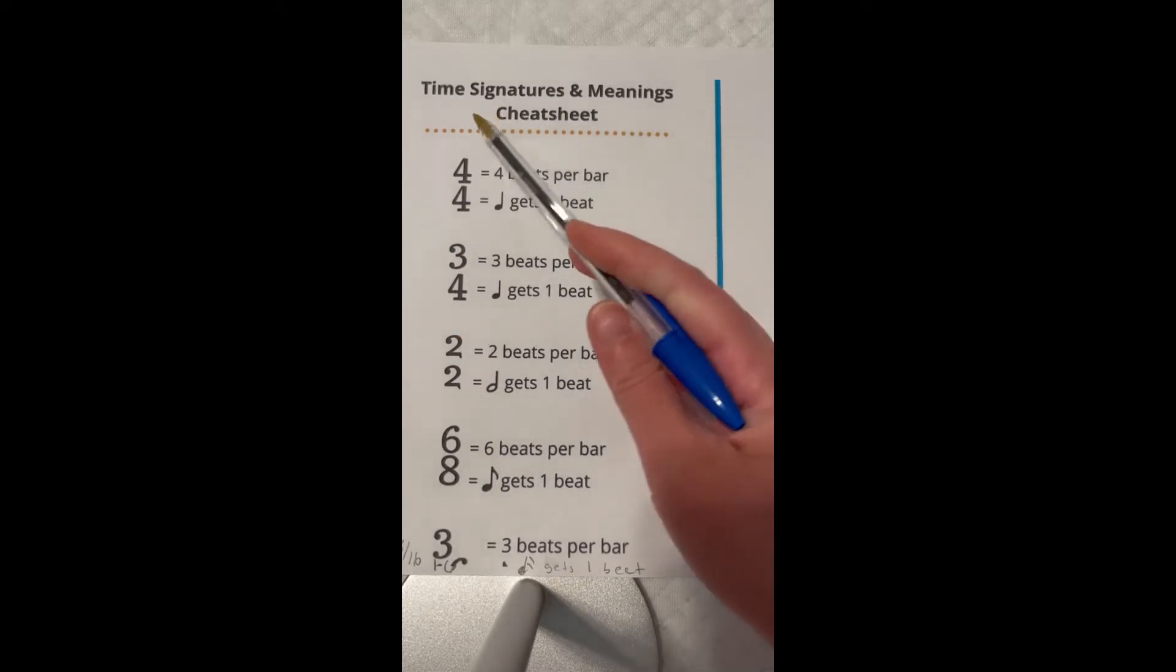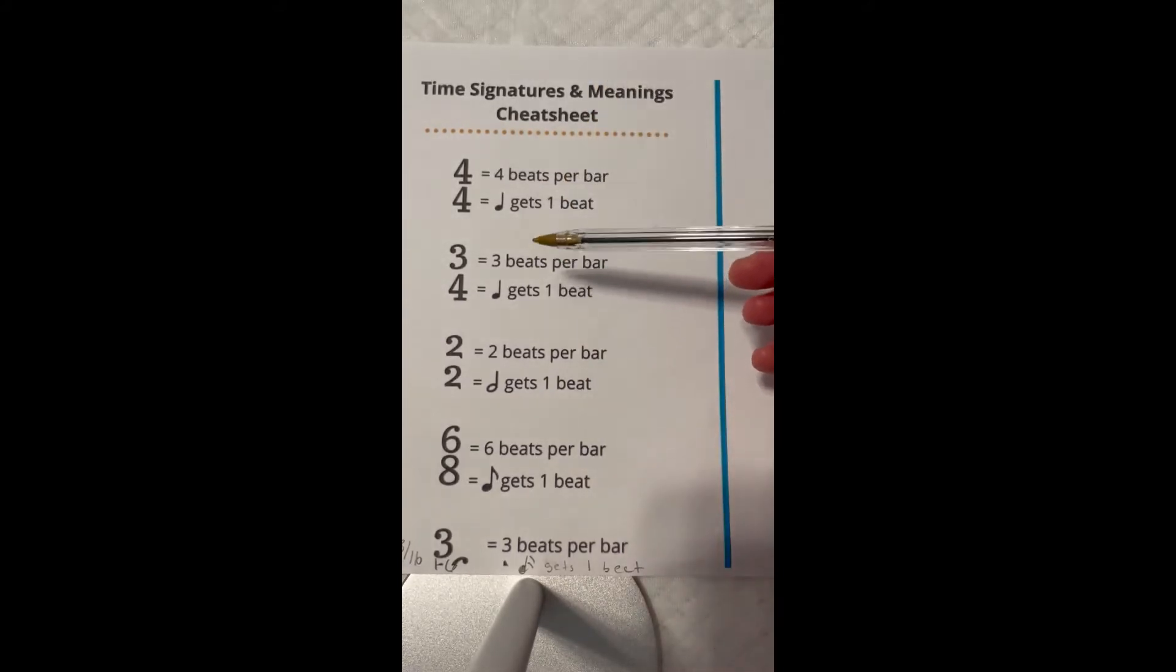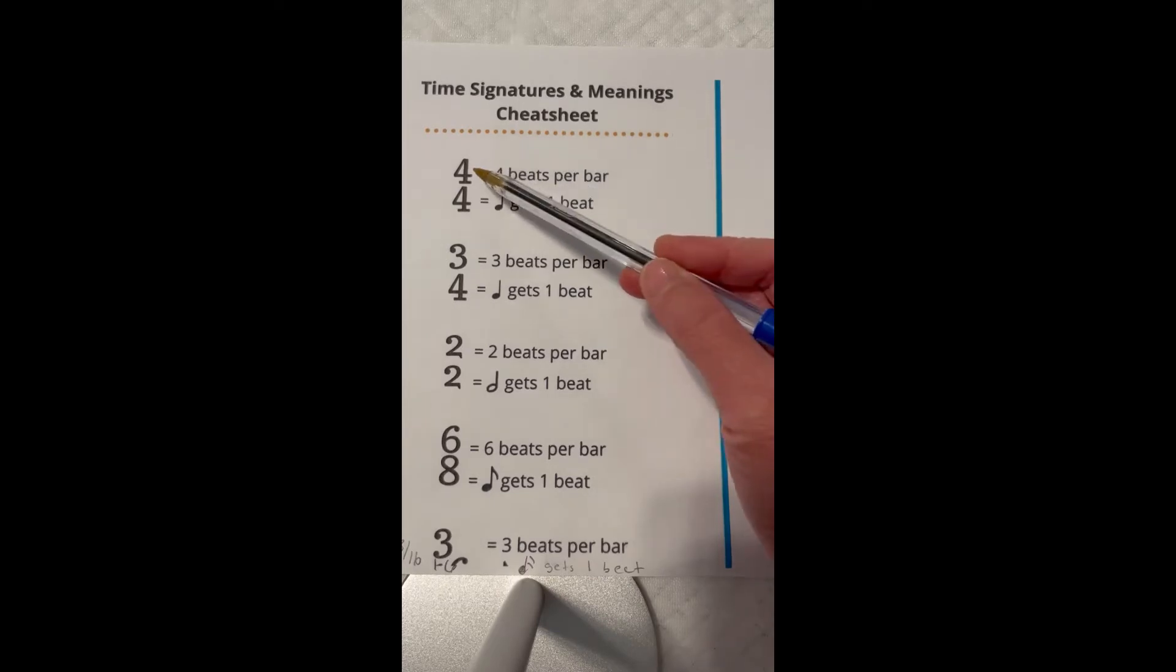These numbers are called time signatures. This is my cheat sheet - I found mine off of Pinterest, or you can take a picture off of my video and keep it in your notes if you like this one.